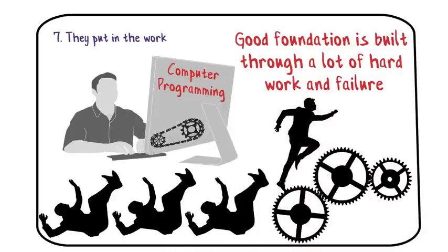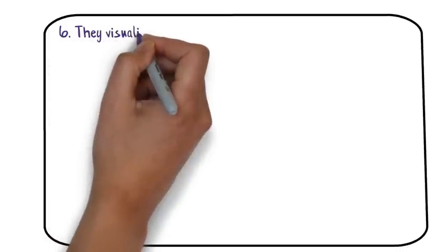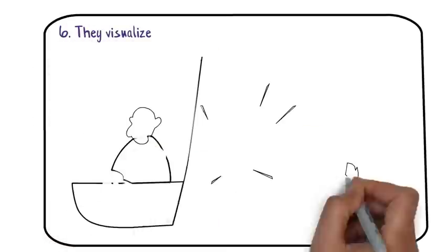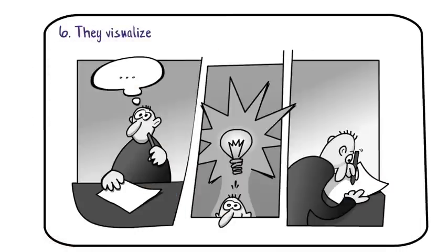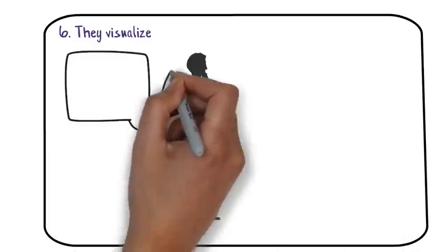Number six: they visualize their tasks. Many people aren't aware of how powerful visualizing can be in their lives. Research has also found that people who imagine themselves performing a task improve their performance in that particular task. Let me tell you an interesting fact: an exercise psychologist in Cleveland, Ohio discovered...